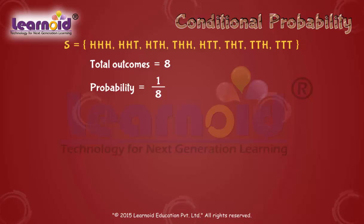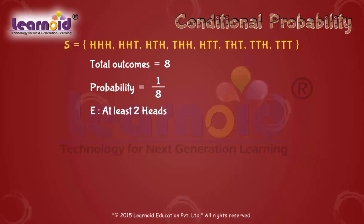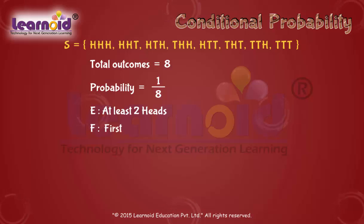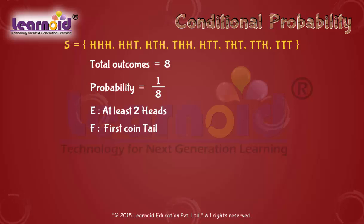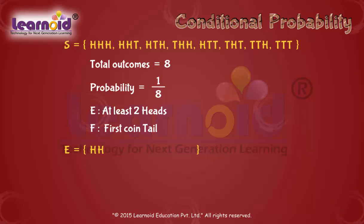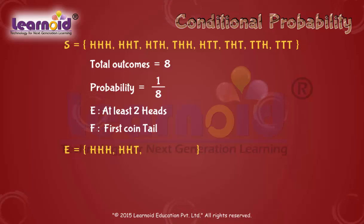Now let us define some specific events in the coin toss experiment. Let E be the event when at least two heads appear, and F be the event when the first coin shows tail. Then we can write set E as: head-head-head, head-head-tail, head-tail-head.